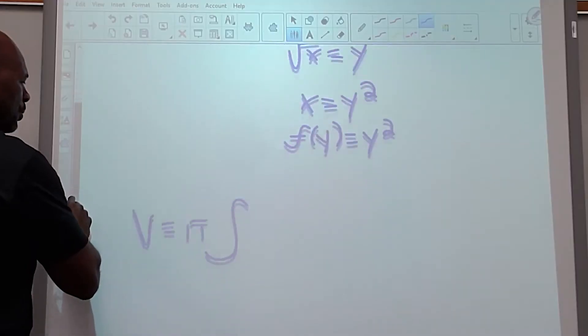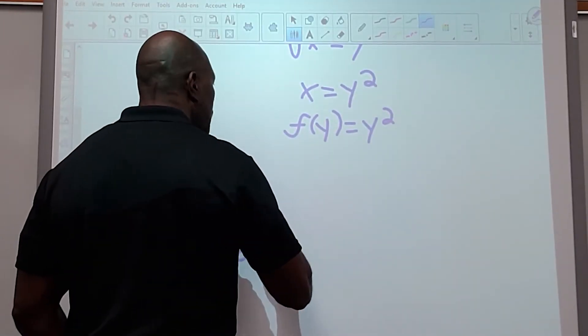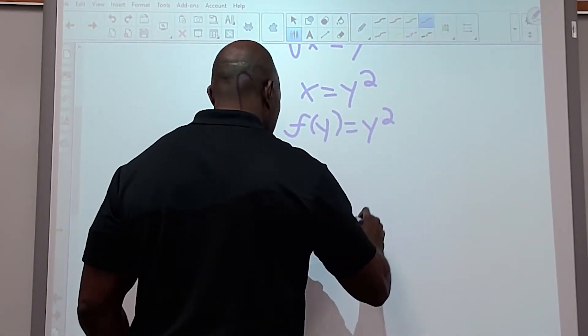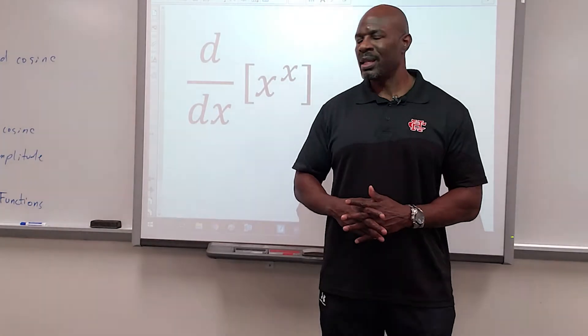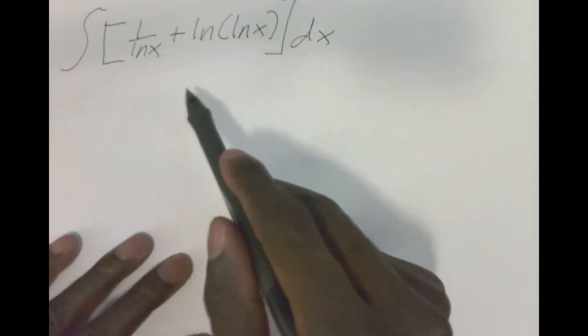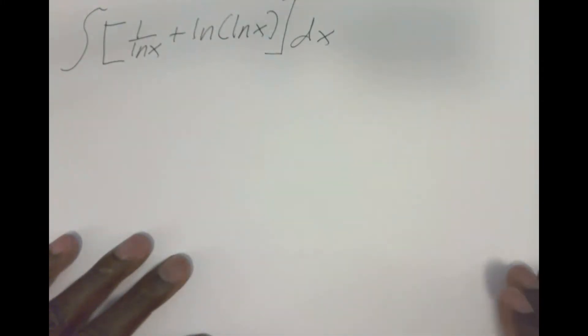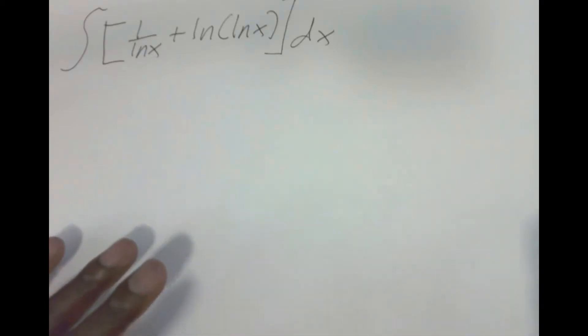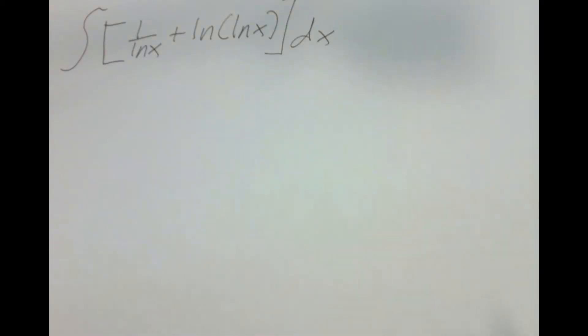Welcome, and it's time for another MIT integration bee problem. So you can see here we're integrating 1 over ln x plus ln of ln x. This is not the most difficult problem in the world once you figure out a way to do it, but it's a very beautiful solution — the way this solution develops is very beautiful — so it's a nice problem to tackle.